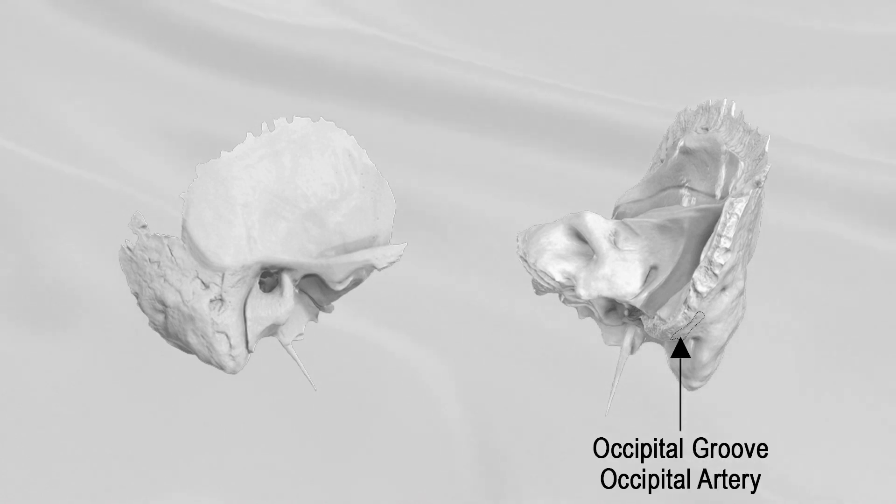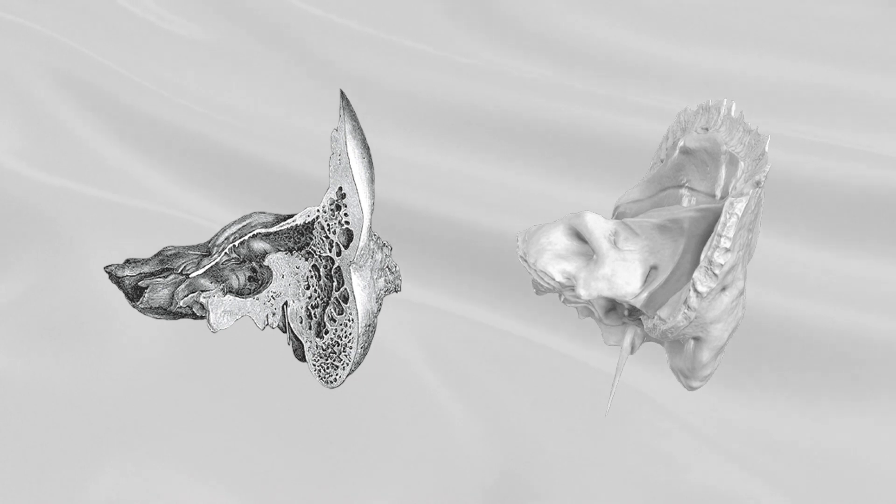The inner surface of the mastoid portion presents a deep, curved groove, the sigmoid sulcus. A section of the mastoid portion shows several hollow spaces of variable sizes, the mastoid cells.